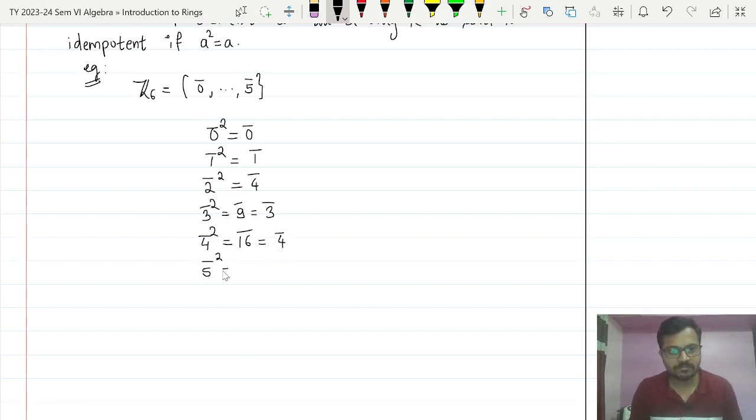Next, 5 bar square is 25 bar. What is 25 bar modulo 6? 1 bar. That is it, six elements.